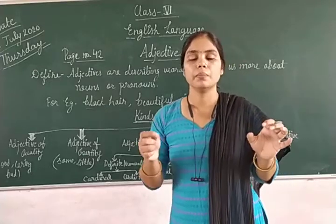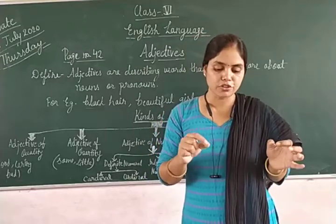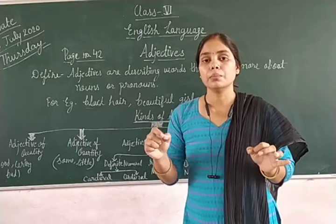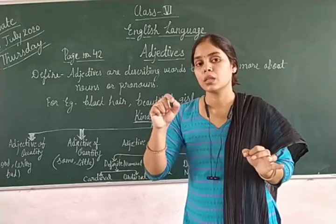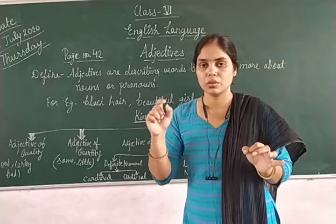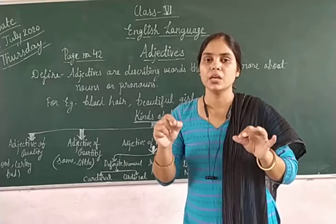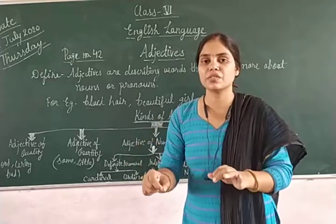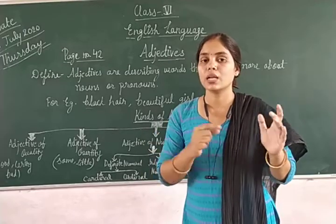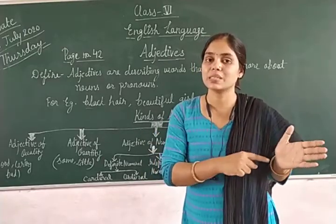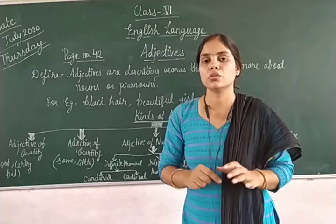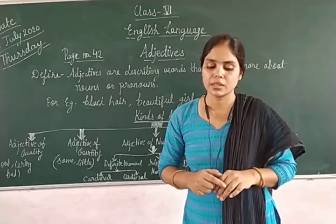So adjective of number comes with countable nouns. You have to remember this, because some adjectives in adjective of number also appear in adjective of quantity, which can cause confusion.